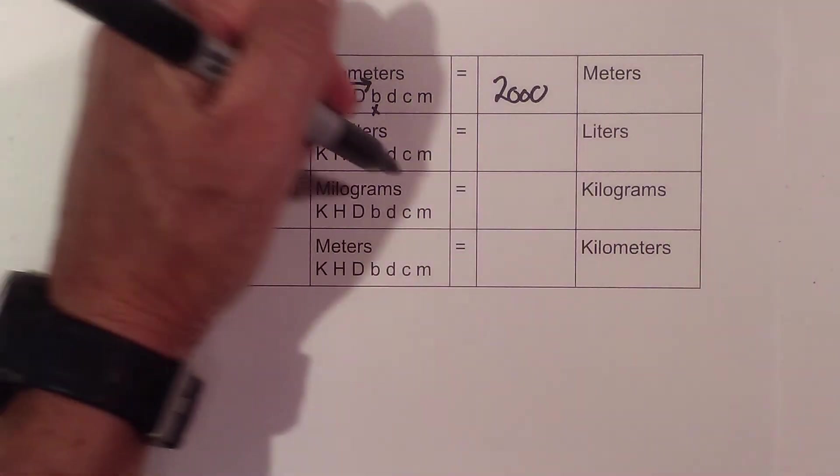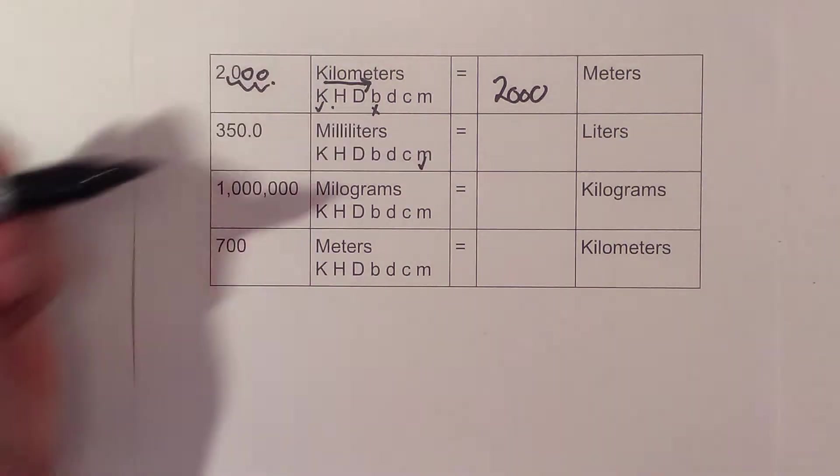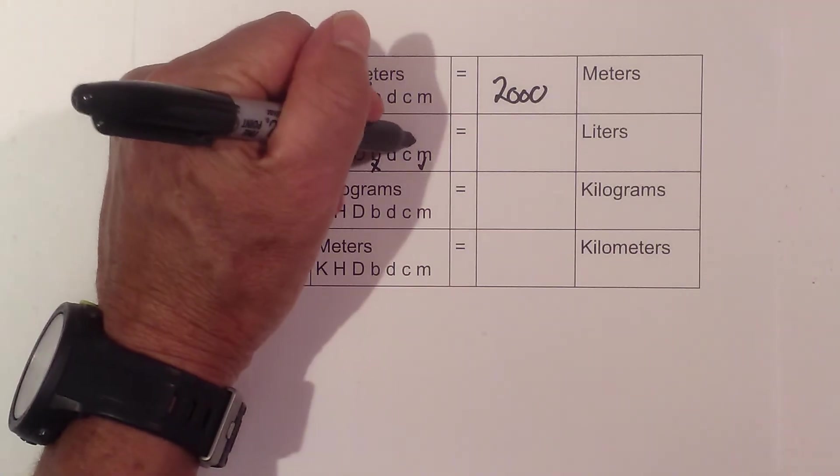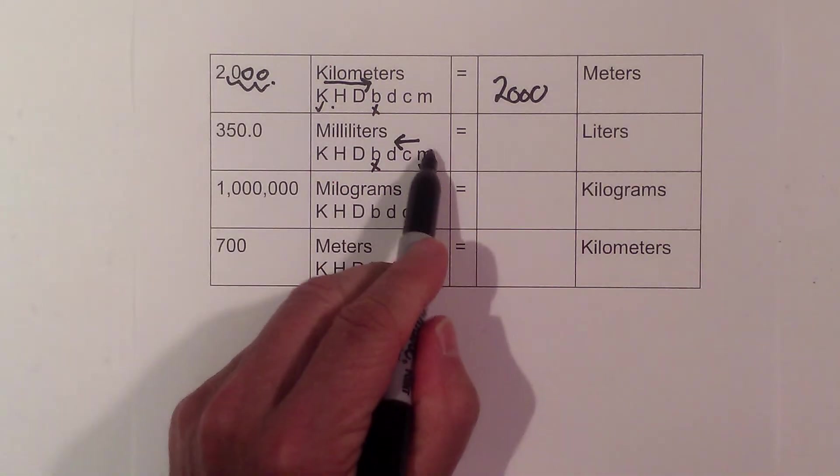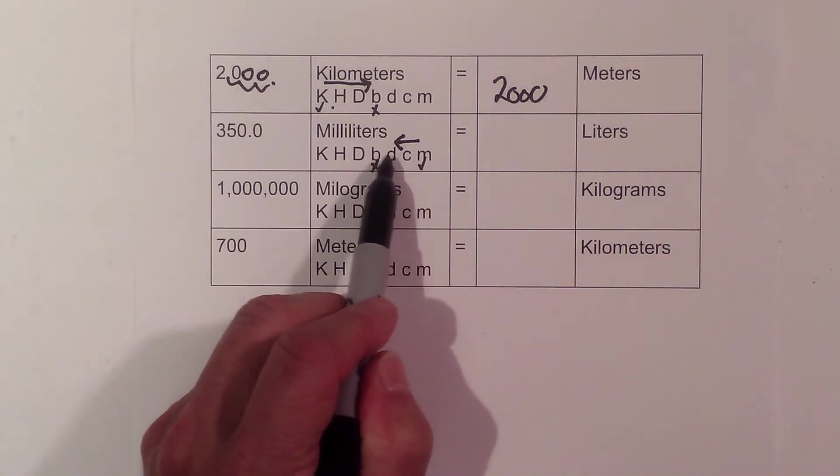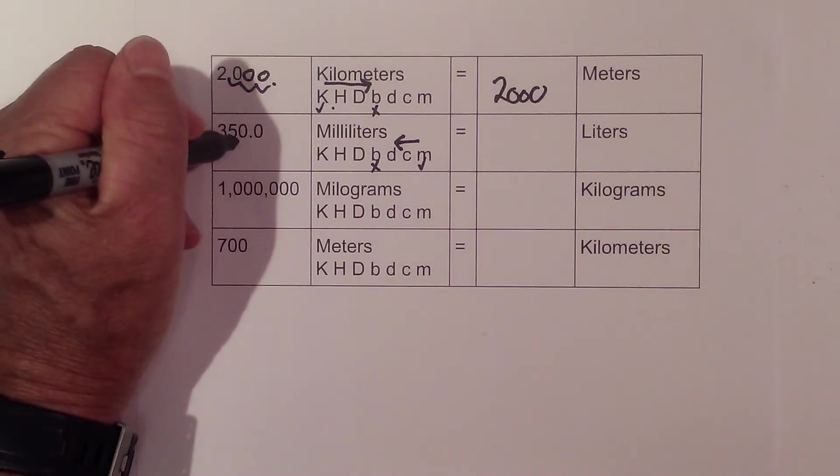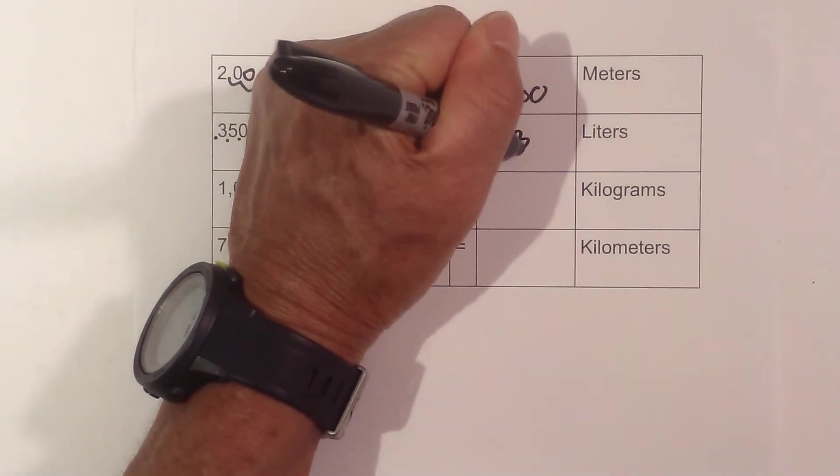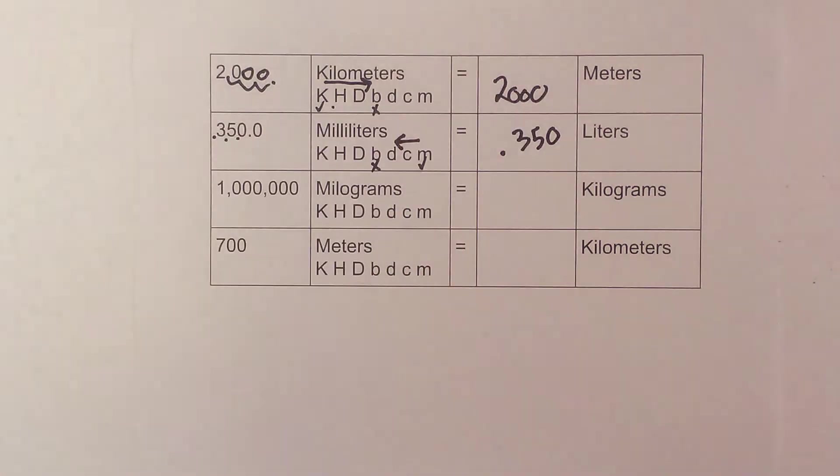Now let's go from 350 milliliters. Put a check where I begin. I'm going to liters, which is a base unit—put an X there. I'm going from the check to the X, from start to finish: one, two, three. So I move it one, two, three, so it is 0.350 liters.